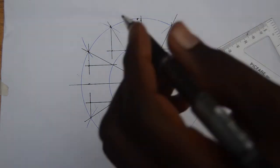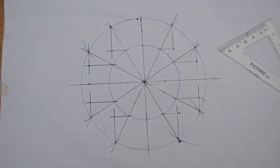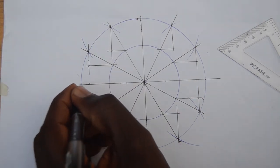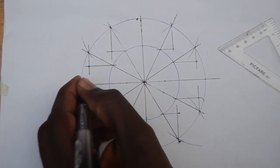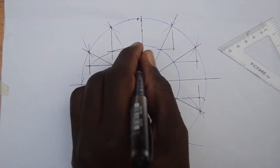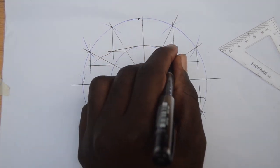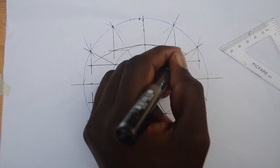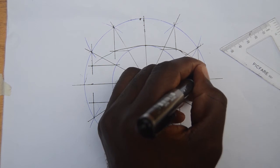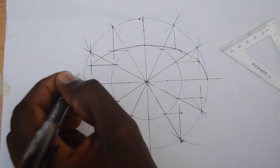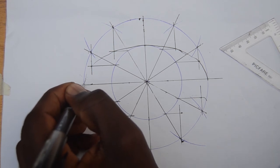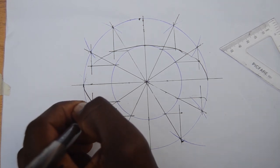Using freehand, join these meeting points together with the vertices. Make sure that you carefully do that. And finally, outline your work to give you the answer, which is an ellipse given the major and minor axis using the concentric circle method.